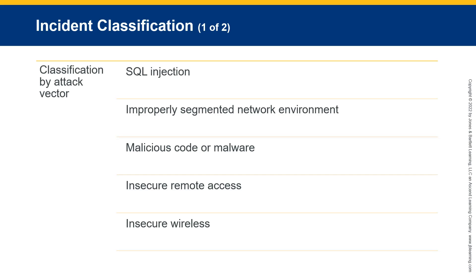Malicious code, or malware — programs such as viruses, worms, Trojan applications, and spyware — are added to a platform without a user's knowledge. These programs can damage systems, delete files, encrypt files, and demand ransom or exfiltrate confidential data.